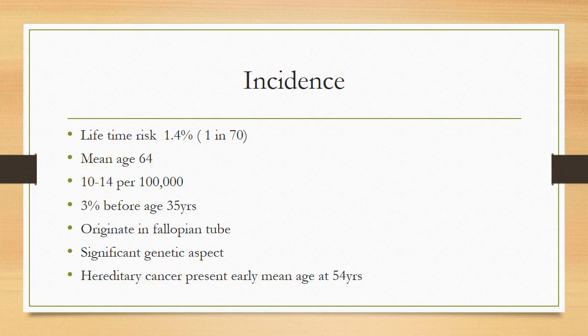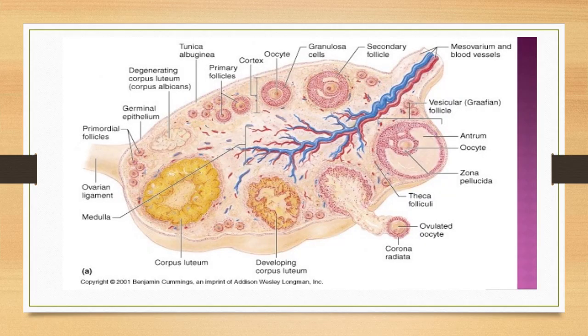There are certain new things in the etiology of ovarian cancer. Epithelial ovarian cancers are now known to originate in the fallopian tube, and there is a significant genetic aspect to these cancers. Hereditary cancers present at 54 to 55 years of age — 10 years earlier than average. This diagram shows the anatomy and histology of the ovaries: surface epithelium, germinal epithelium, primordial follicles, supporting cells of the ova, and stromal cells — all giving rise to different types of ovarian cancers.